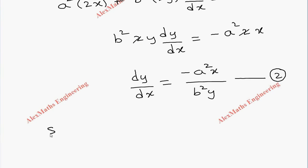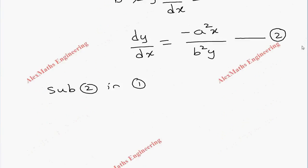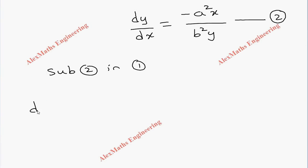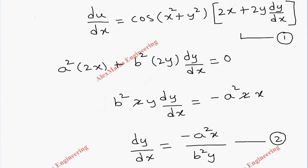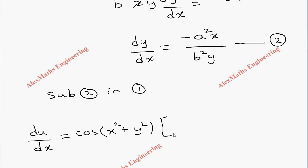We will substitute expression 2 into expression 1. So du/dx equals cos(x² + y²) multiplied by the bracket 2x plus 2y into dy/dx. Opening the bracket: 2x plus 2y, and we substitute dy/dx as minus a²x divided by b²y.